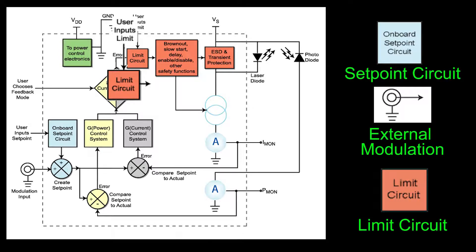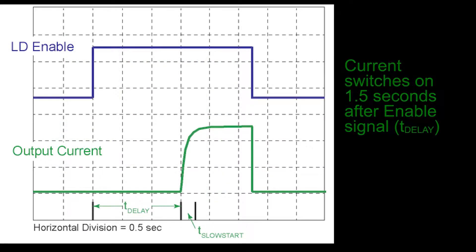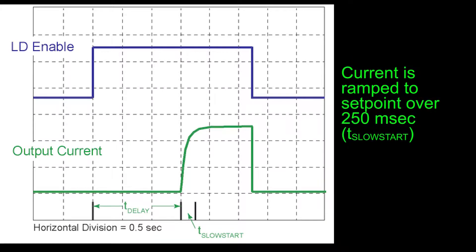As a safety feature, when the current limit is reached, the output turns off. To meet CDRH safety requirements, output current switches on 1.5 seconds after the enable signal is applied. Current is initially ramped to the set point over 250 milliseconds.